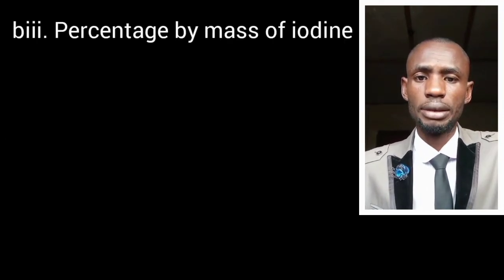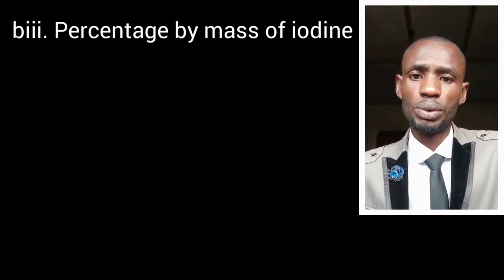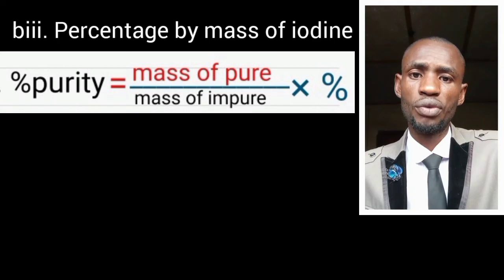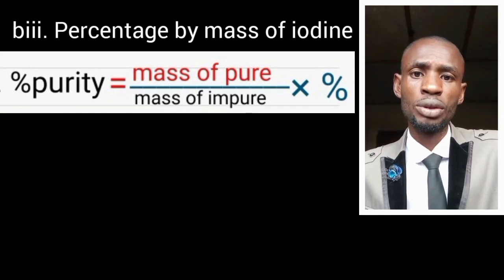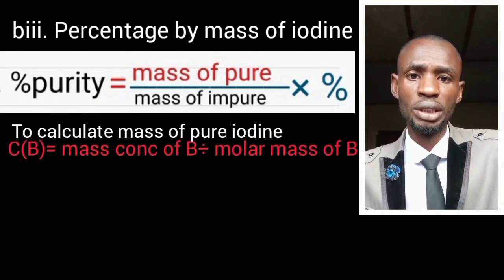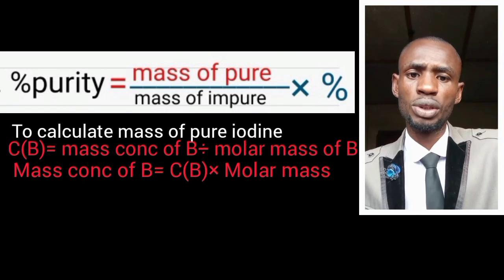Question number three: percentage purity of iodine. The formula for calculating percentage purity is: (mass of pure ÷ mass of impure) × 100. We are not given the mass of pure iodine, so we will use a formula to calculate it. When you use a formula to calculate a value, the value obtained is the pure mass. So we go back to: molarity of B = mass concentration ÷ molar mass, and make mass concentration the subject — that value is the mass of pure iodine.